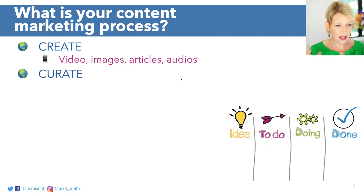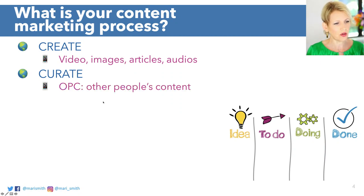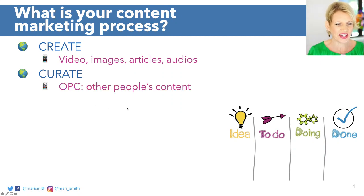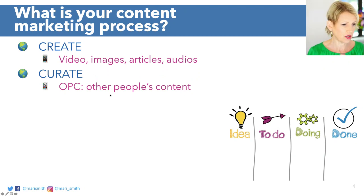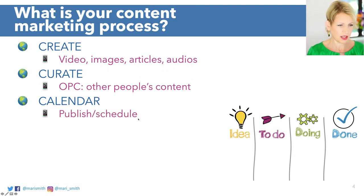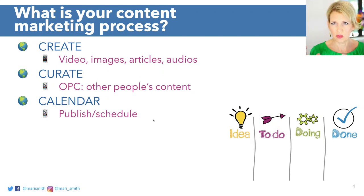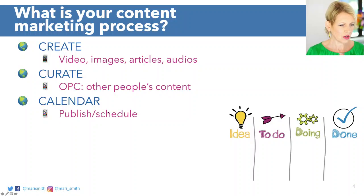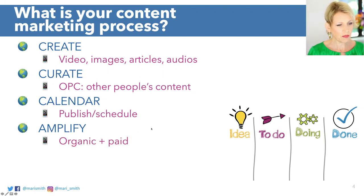However, to create all your own original content can be really time-consuming. So you want to do a blend of what's called curation — I call it OPC, other people's content. My Twitter account is almost all OPC. I love to cherry-pick the best content out there and share it. Next, you're going to calendar it — publish or schedule. Most of you are going to use a scheduling system because it takes too much management to always be present on every platform hitting the publish button. So you'll use some kind of scheduling platform — there are many wonderful ones to choose from.